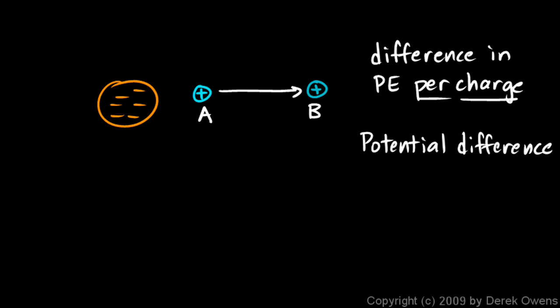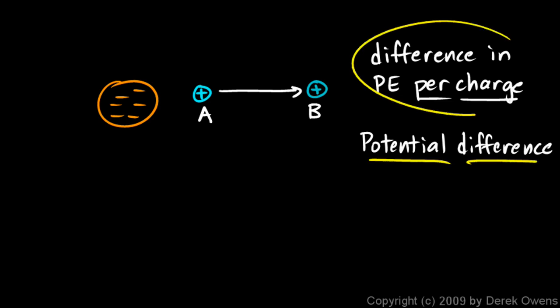The term 'potential difference' is just a shorthand way of saying the difference in potential energy per charge. Saying there's a potential difference between two points means a charge at one point will have a different potential energy than at the other point, and that difference in potential energy is measured in joules per coulomb — how much difference in energy per charge.